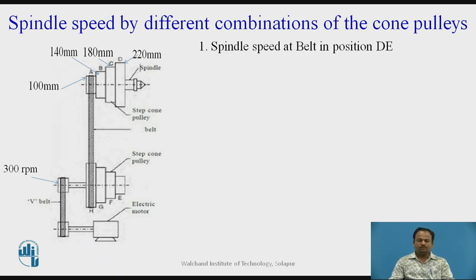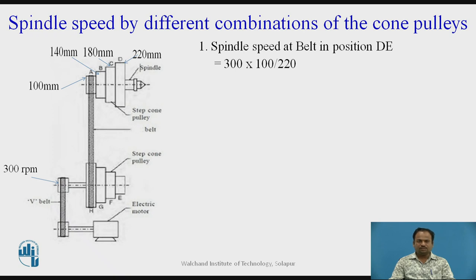First, we will calculate spindle speed at belt in position D, which is the first position, where the input diameter is 100 mm and the output diameter is 220 mm. The counter shaft is rotating at 300 rpm. Therefore: 300 × 100 / 220 = 136.4 rpm. That is the spindle speed we are getting at this position.